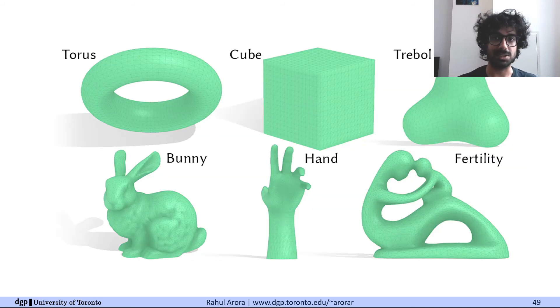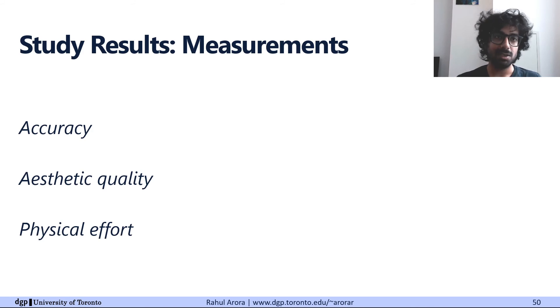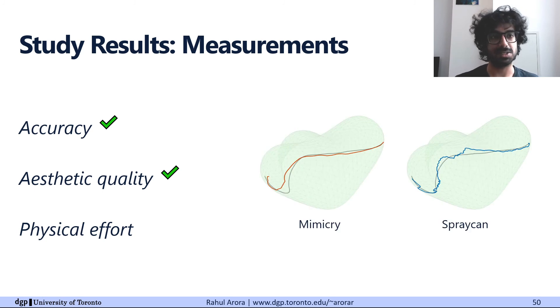We selected six shapes for the study, each having different features and characteristics, and participants drew 10 different curves on each. And then we measured the accuracy of the curves, their aesthetic quality, and the physical effort required to execute the curves. And we found a very clear answer for all three. Mimicry curves were more accurate, that is, they were more closely aligned with the target curve. They were aesthetically nicer, that is to say, they had less high-frequency wiggly artifacts, and here's an example. And they required less physical effort, as the users had to rotate their hand and head much less. For the formal definitions of our measurements, please see the paper. And we also asked the participants for their subjective opinions, and they echoed all these points. They felt they were more accurate, were drawing smoother curves, and had to use less physical effort with mimicry.